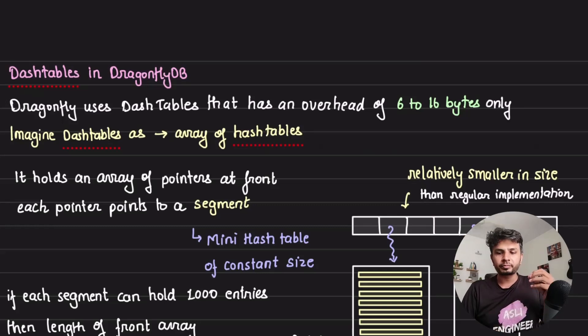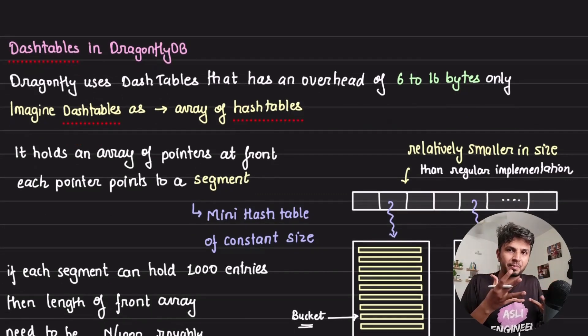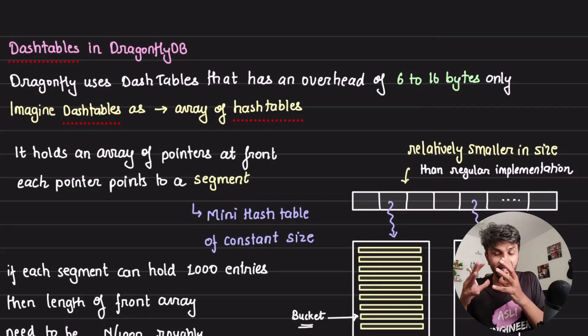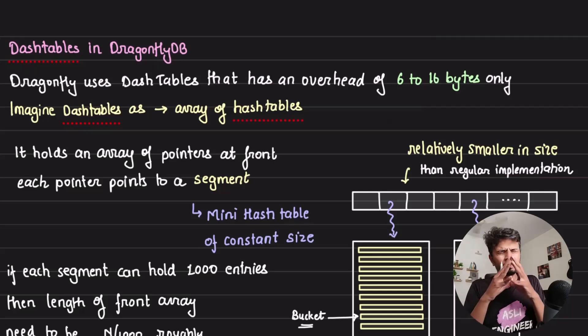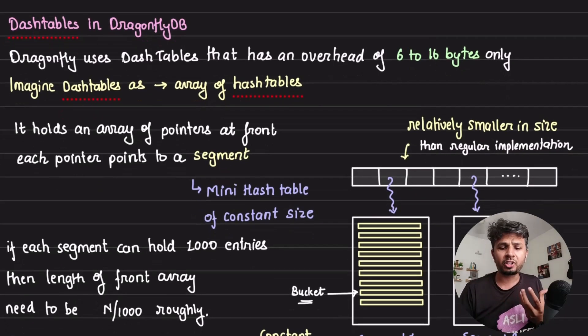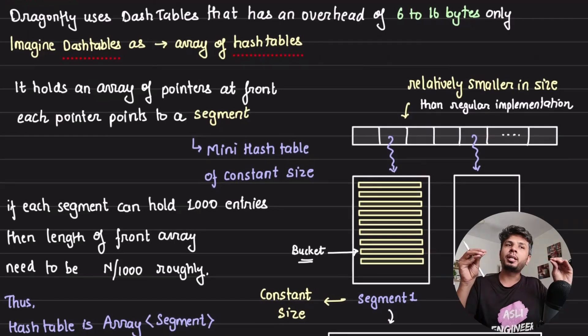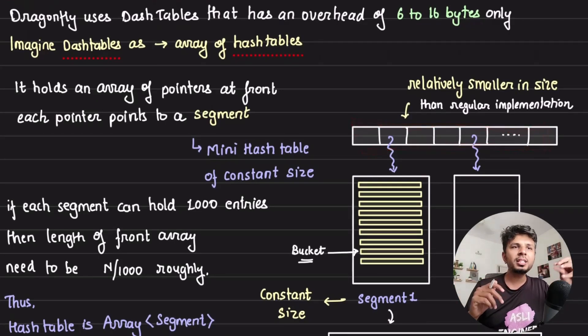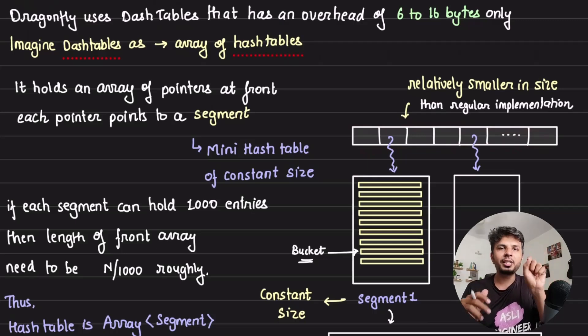How are these dash tables implemented? Dash table actually holds an array of pointers at the front. These are array of pointers. What does this point to? Each pointer points to a segment.